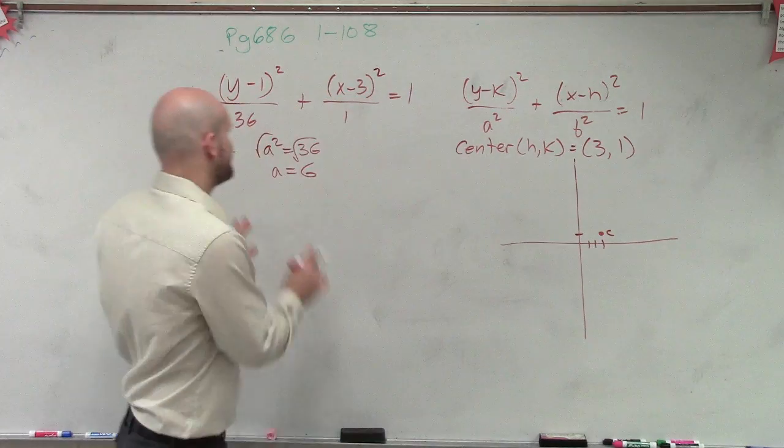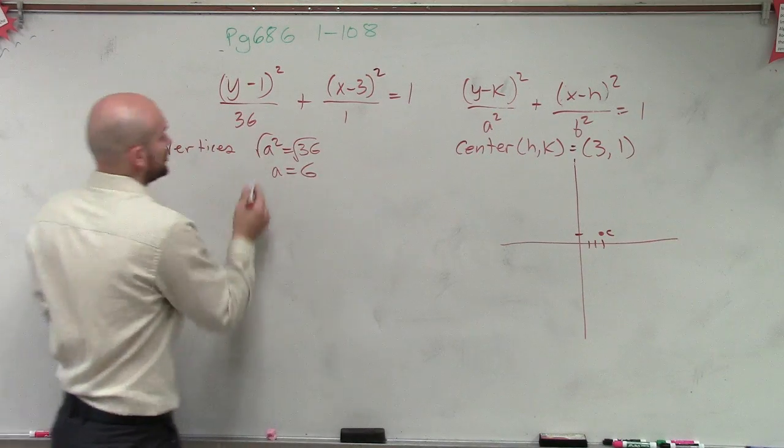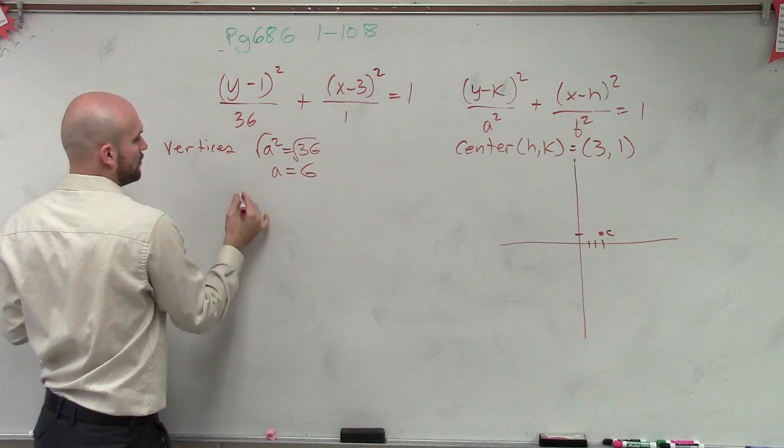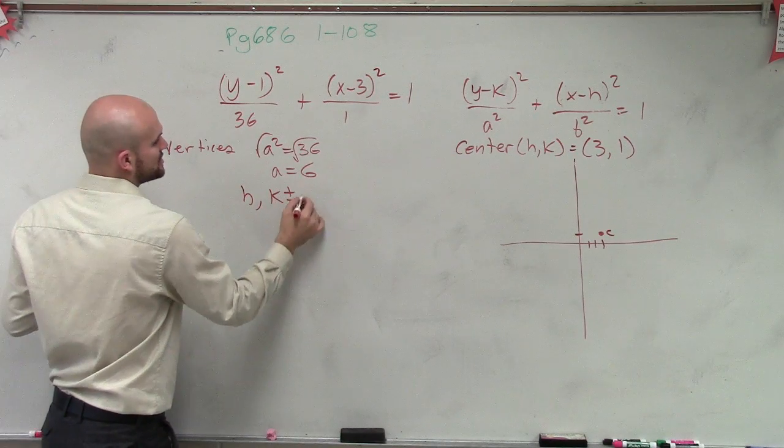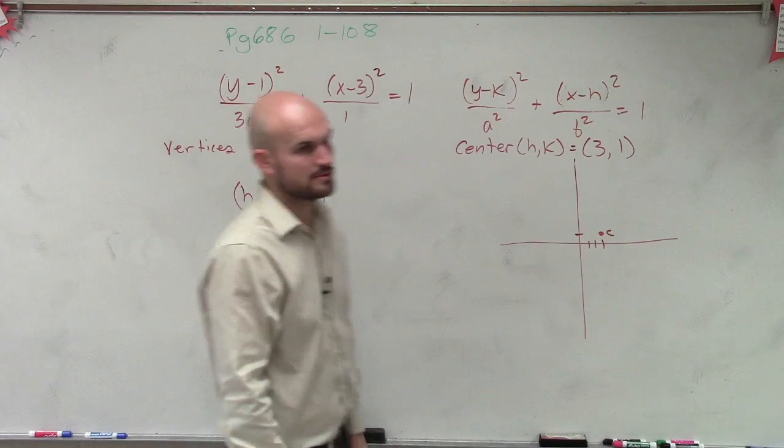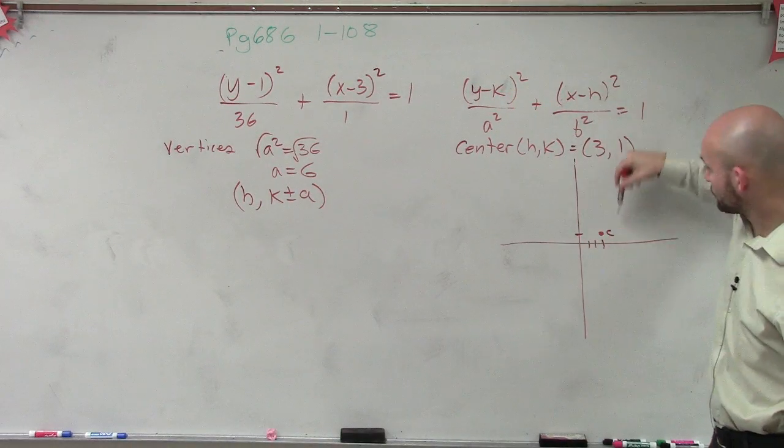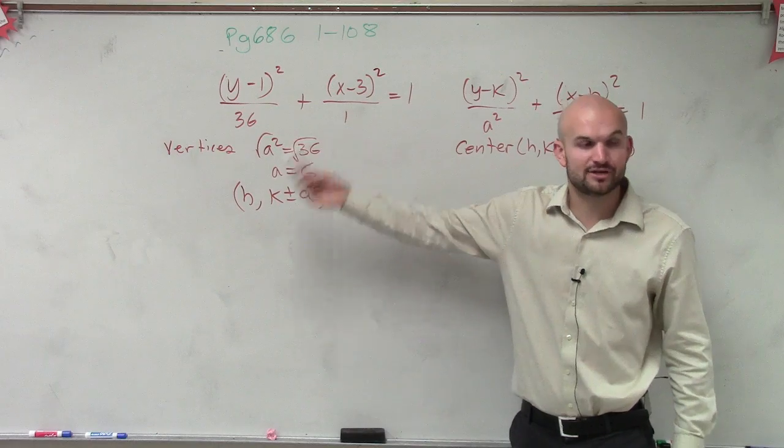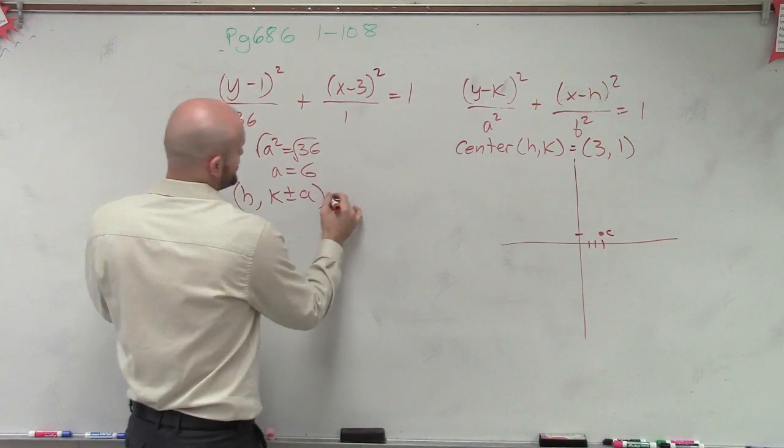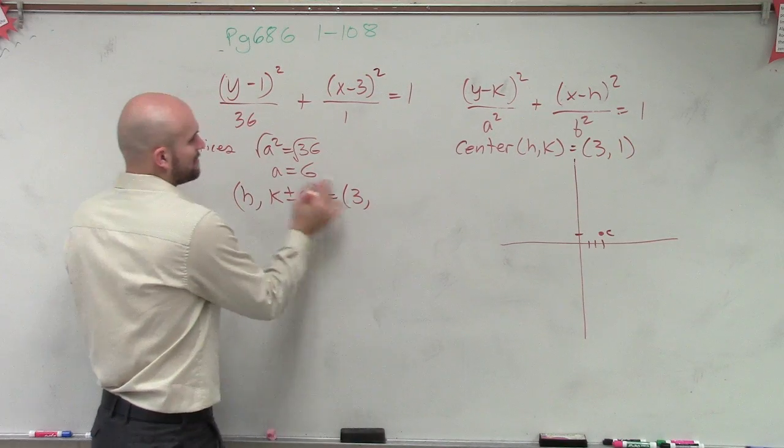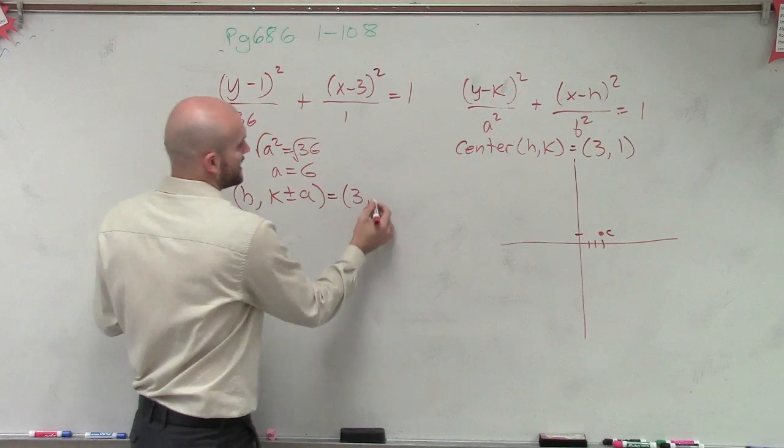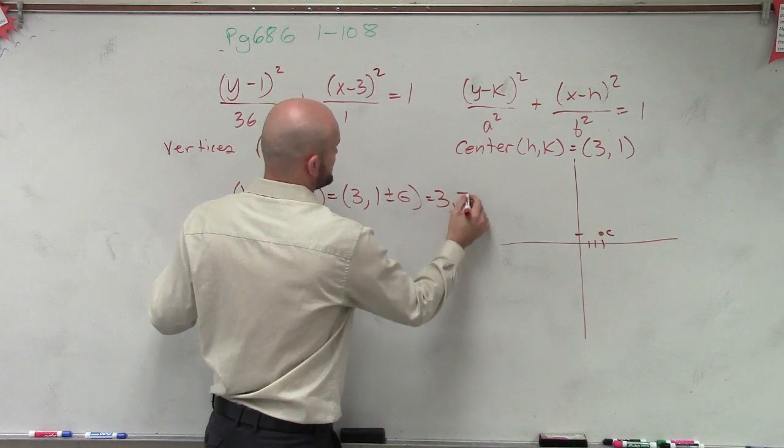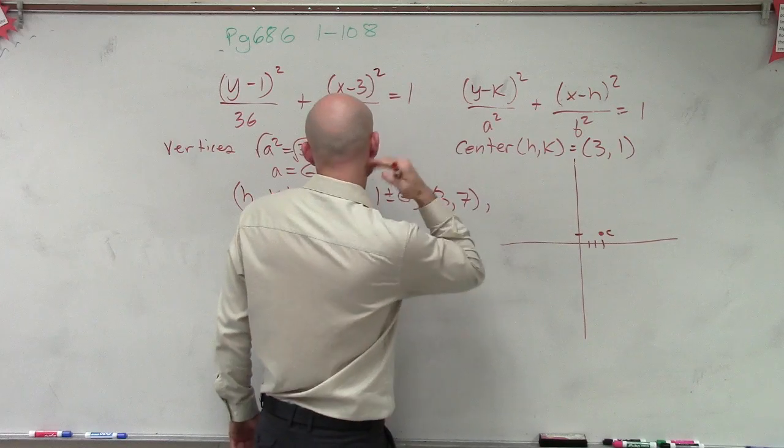So to find my vertices, it's going to look like this. Your H is going to remain the same, but your vertices takes a general form of H comma K plus or minus A. So your H remains the same of your center, right? Three is not going to change. But now what you're going to do is you're going to add your A to the K. And you've got to add or subtract it. So let's take a look at this. So my H is three, my K is one plus or minus six. So therefore, I'm going to have two vertices, which are three comma seven and three comma negative five.